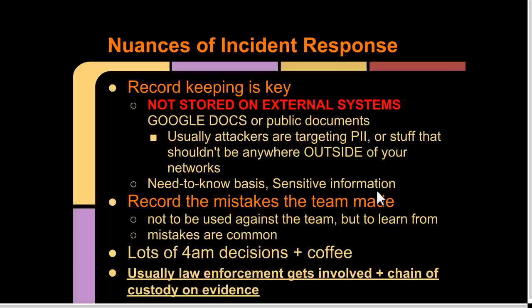Nuances to effective incident response involve basically record keeping. There are going to be lots of 4 a.m. decisions. Things also get complicated when law enforcement gets involved. If you have any compromised personally identifiable information or legally protected data, such as HIPAA data, FERPA data, or financial data, it's common for the FBI cyber crime units to get involved. In which case, a chain of custody on evidence gets established. If you touch a machine that has been specified as evidence, you can face criminal charges for tampering with evidence even though you're just doing your job. People do go to jail over this and lose their jobs.